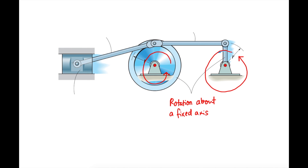This rigid body here will be traveling back and forth due to the motion of the two rotating parts. Basically, the motion of this rigid body is going to be back and forth, but only on one axis. Therefore, the motion of this rigid body is translational motion — and to be specific, because its motion does not involve a curvilinear path, this is a rectilinear translation.